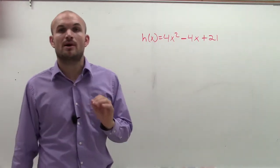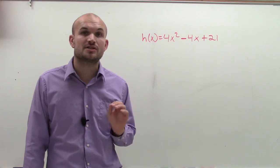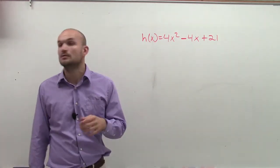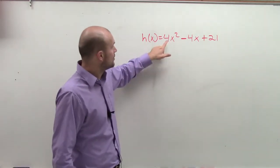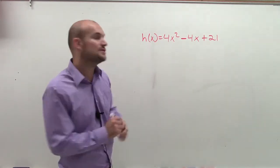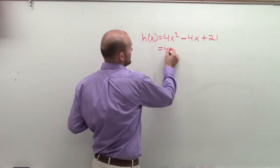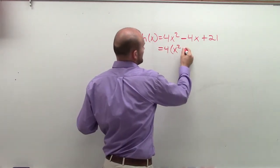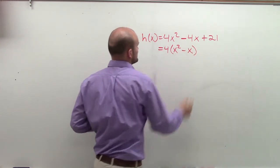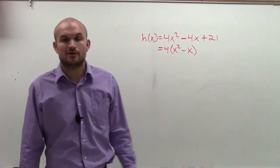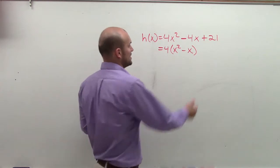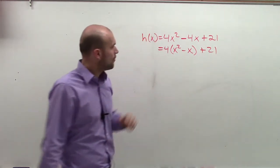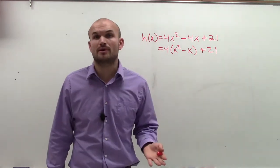The next thing we want to do is we want to make sure that our coefficient of our x squared term is equal to 1. So right now, I have it as 4. So what I'm going to do is I'm going to factor out that 4. Now, I want to factor out that 4 out of the first two terms. I can't factor it out of the third term, which that's OK. So I'm left with now an equation 4 times x squared minus x plus 21.